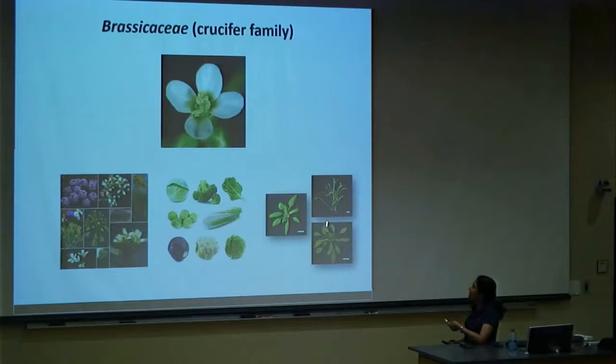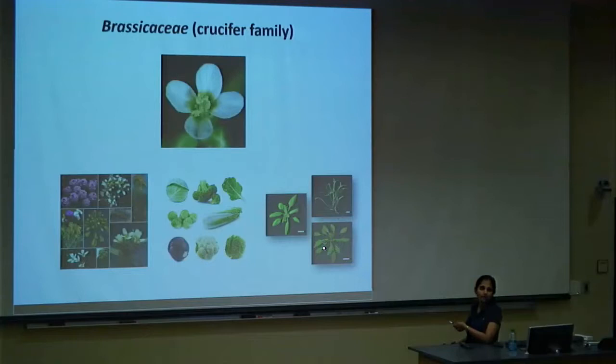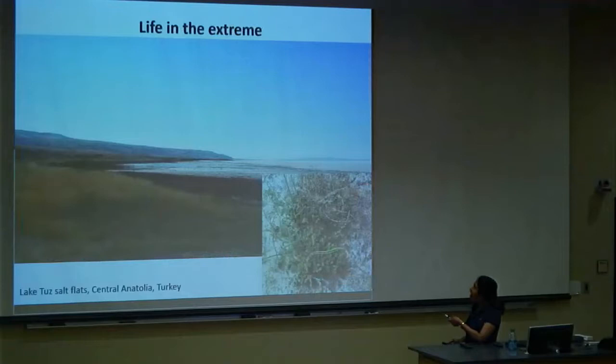Why are we interested in Thellungiella? In the Thellungiella genus you find crucifer plants that are highly adapted to abiotic stress — high salt, high light, drought, poor nutrients. These plants are champions at tolerating poor environmental conditions for normal plant growth. For that biological reason we were interested in sequencing the genome of this plant.